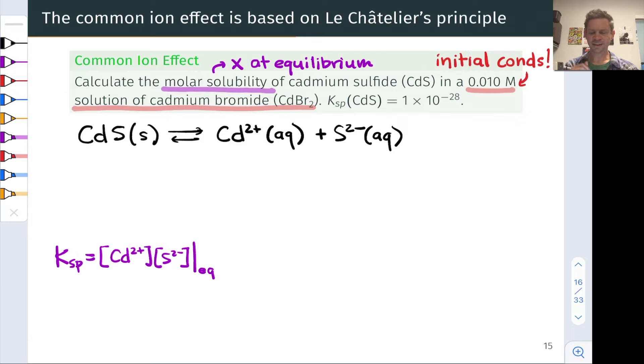We can think of the 0.010 molar concentration of cadmium in the cadmium bromide solution as initial conditions in the language of an ICE table.